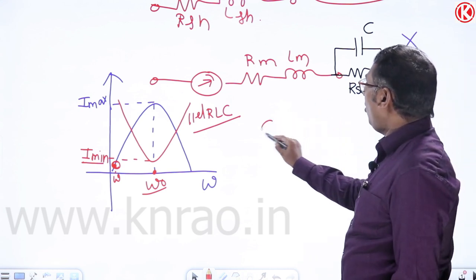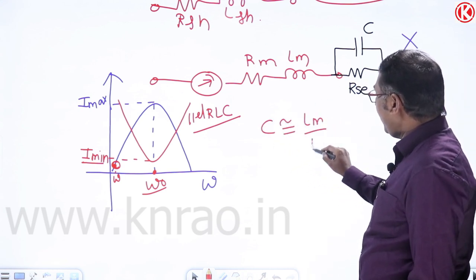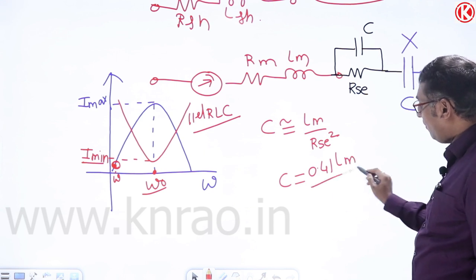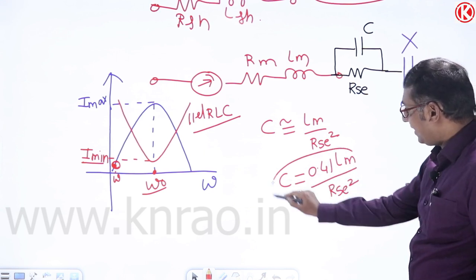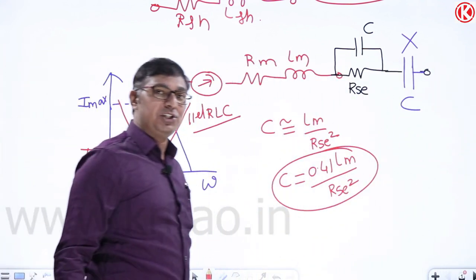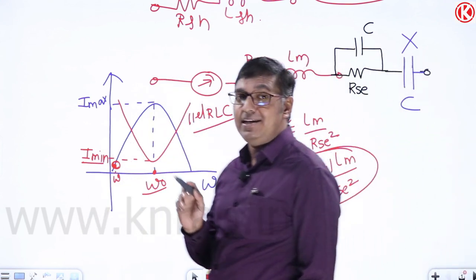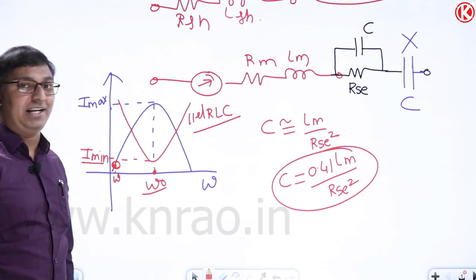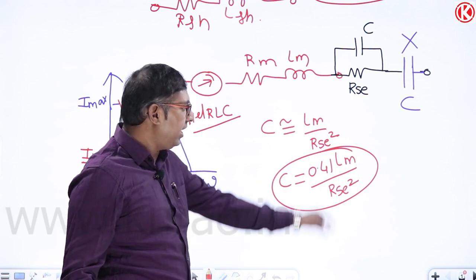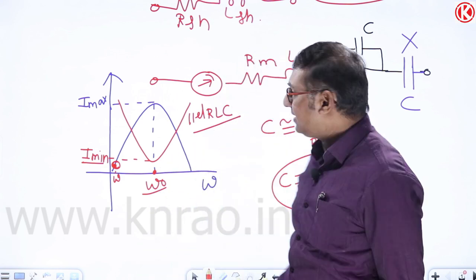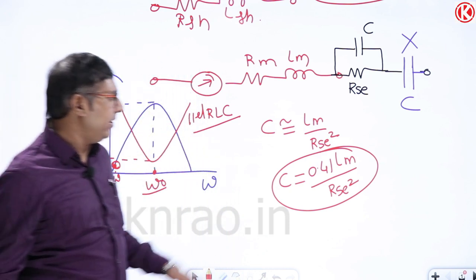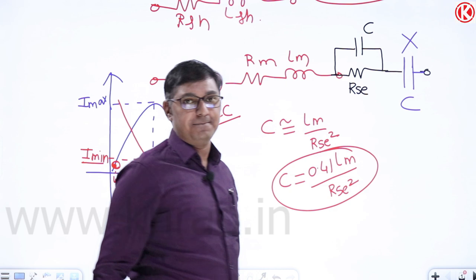The same formula C = 0.41·Lm/Rsc² appears in wattmeter design — where the pressure coil inductance causes error, and a capacitor is connected to a portion of the multiplier resistance to compensate. Direct substitution of Lm and Rsc values gives the required capacitance.